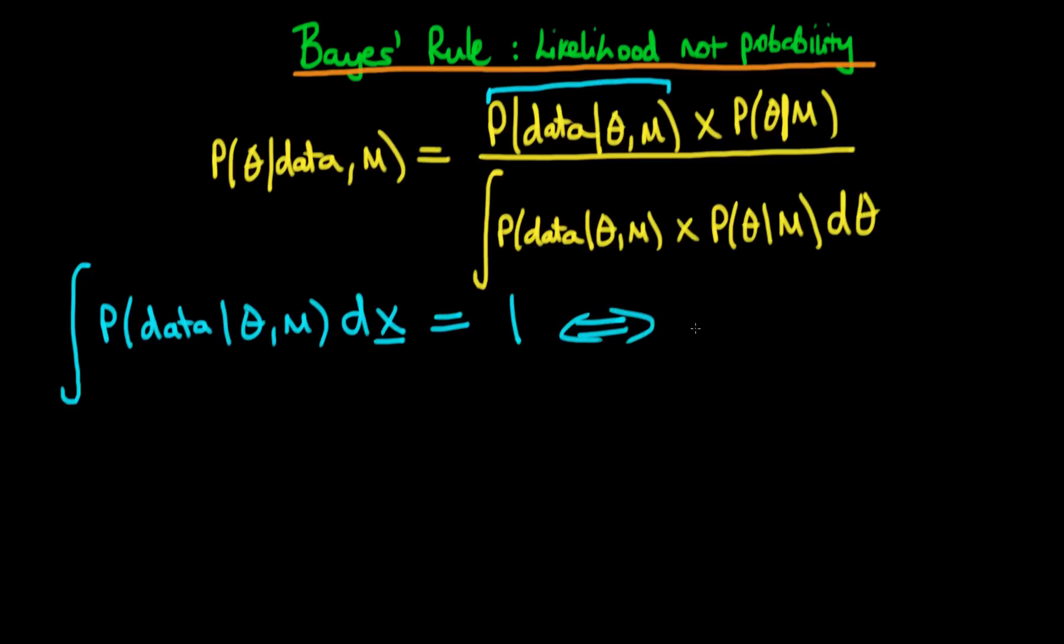So in this circumstance we could think about this particular numerator or this part of the numerator as being a probability density. But note that this was because we assumed that theta was fixed and the thing that was varying is the data.